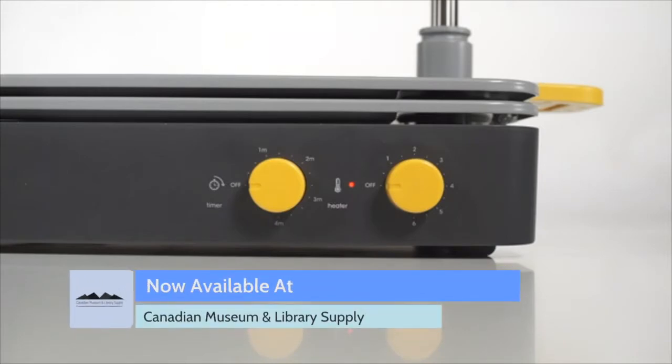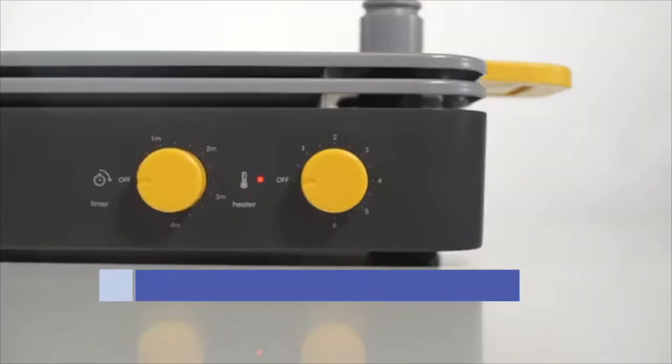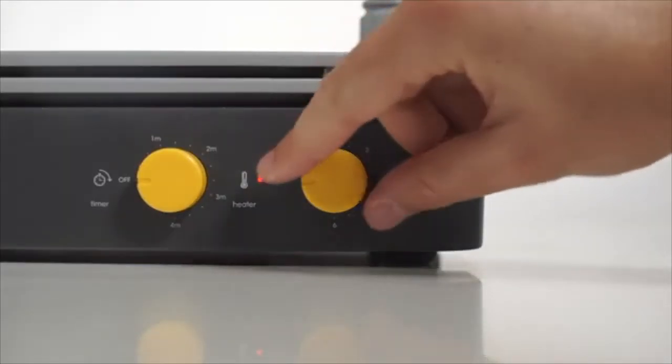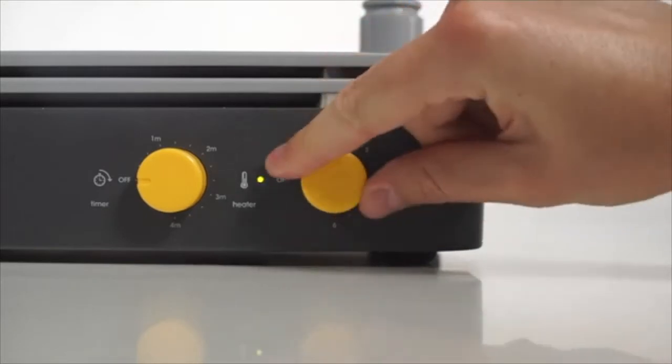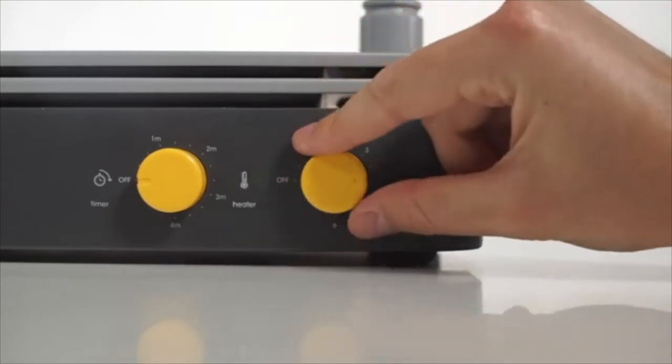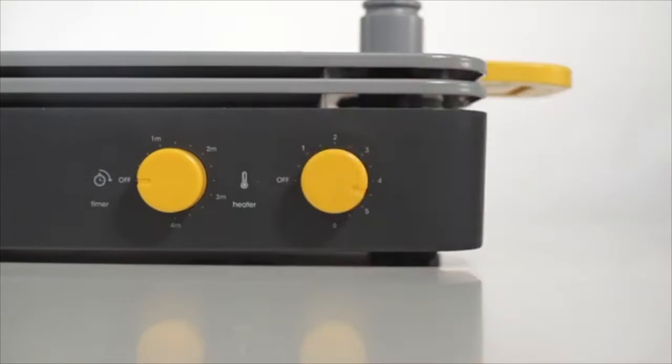These are the control dials for the timer and the temperature of the heater. Turning the temperature dial clockwise turns the machine on and starts warming the heater to the selected temperature. The LED will flash orange whilst the heater is heating up and go green when it has reached the correct temperature.